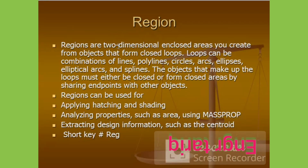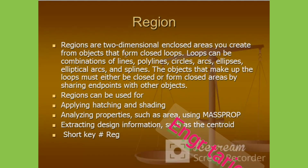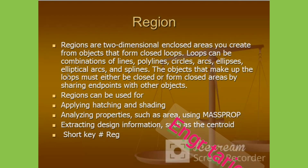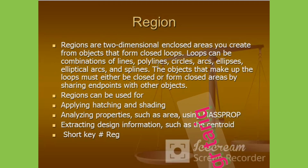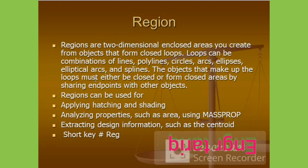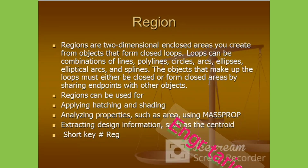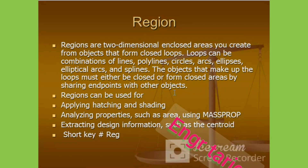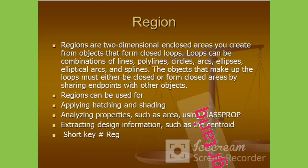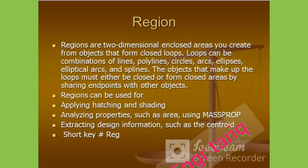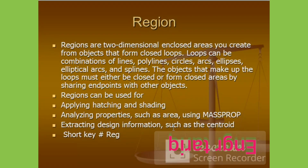Region. Regions are two-dimensional enclosed areas you create from objects that form closed loops. Loops can be a combination of lines, polylines, circles, arcs, ellipses, elliptical arcs, and splines. The objects that make up the loops must either be closed or form a closed area by sharing endpoints with other objects. Regions can be used for applying hatching and shading, and analyzing properties such as area using mass properties.